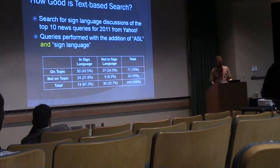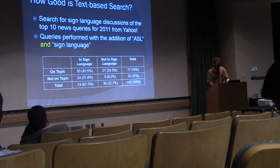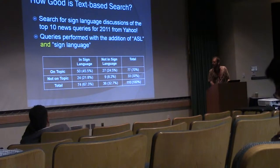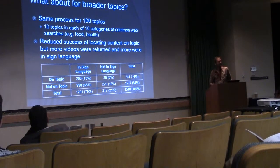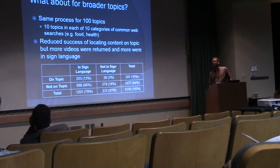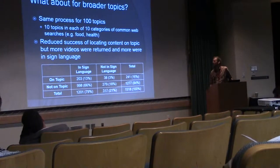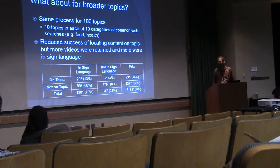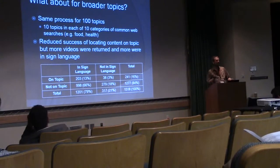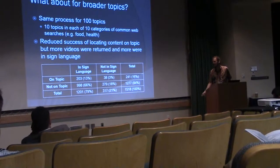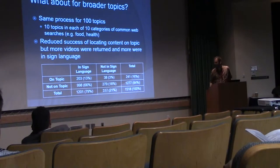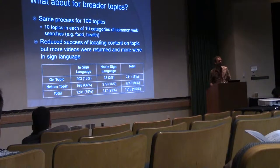So we're missing a lot in finding things that are both in sign language and on topic. A later, larger study where we looked at a hundred topics — ten topics each in ten common information-oriented search genres such as food, health, etc. — showed an even bigger problem. Using the same methodology, only 13% of the results coming back were actually in sign language and on topic.